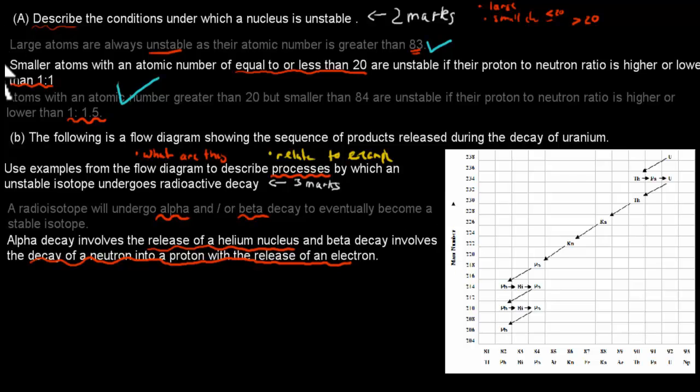That was just the definition of alpha and beta decay. So now we've gotten for this, we definitely get a mark, maybe even two, but definitely one mark. And then let's relate it to the example itself.